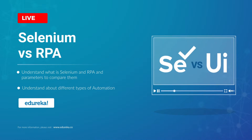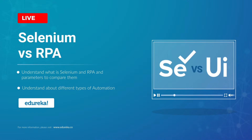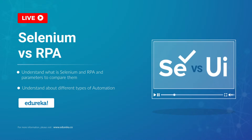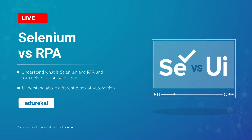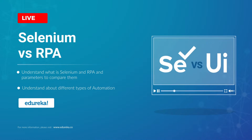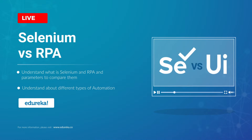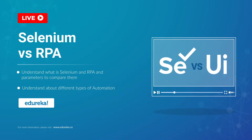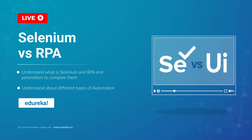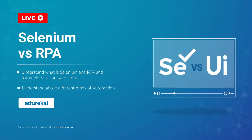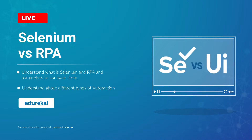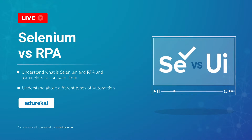Technology in recent days has reached its peaks and the growth of automation has added more wings to this transformation, from automating a simple unit test to automating the whole business process. Technology has augmented its way to the digital era. Hi, I'm Vaishnavi and I welcome you all to the Edureka YouTube channel. In this module, we are going to compare two booming automation technologies that have been in the industry for more than a decade — robotic process automation and Selenium.